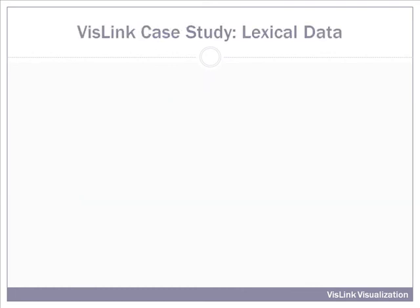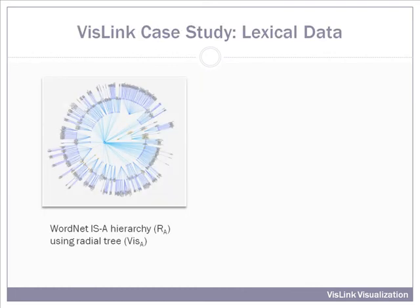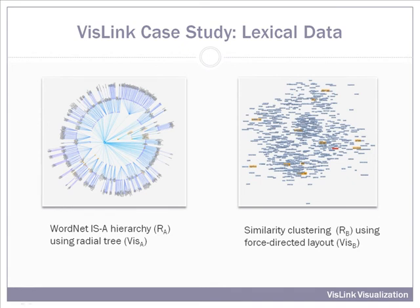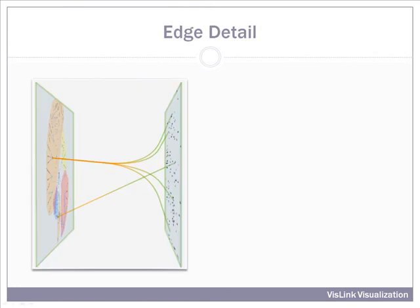Let's now explore the VisLink visualization in detail. We will use examples from a lexical dataset, the WordNet hierarchy, and similarity clustering based on a force-directed layout of word similarity. We're interested in what is the relationship across these visualizations.